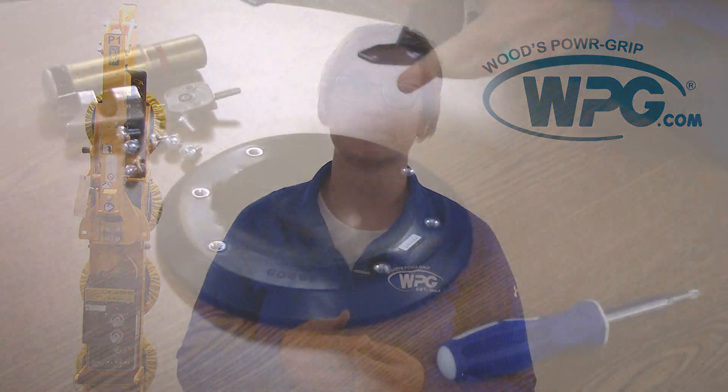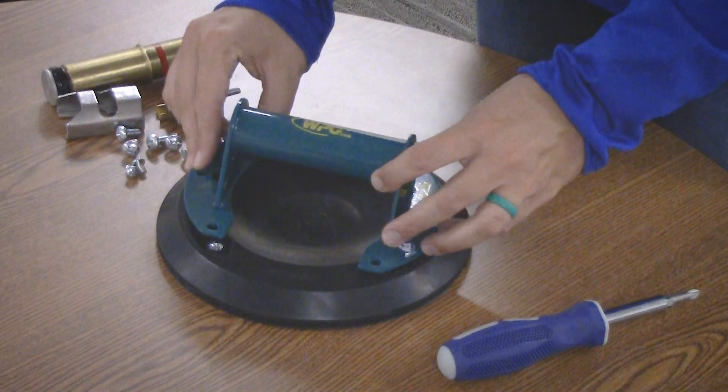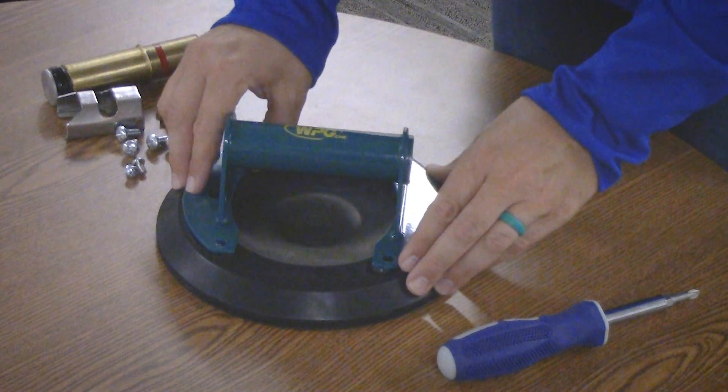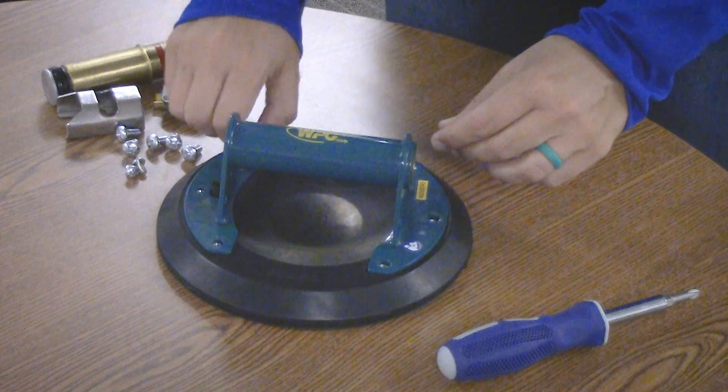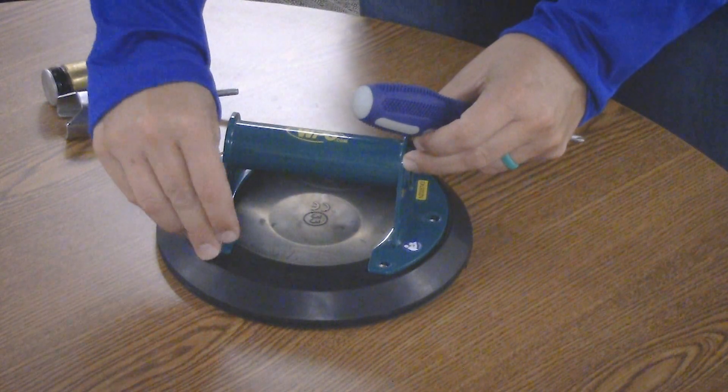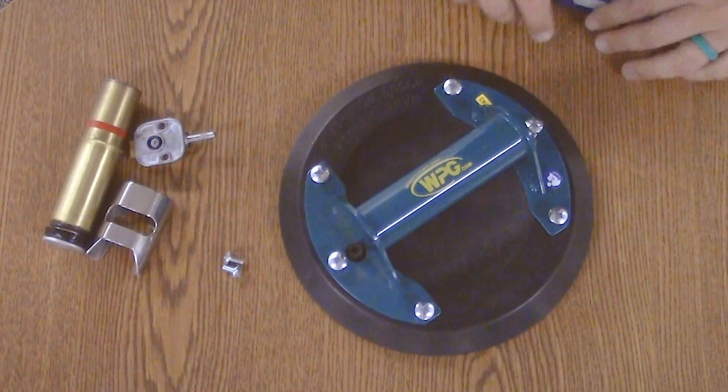Reassembly will be the reverse of what you've just completed, but there are some tips and tricks to help streamline the process. First, reposition the handle on the pad and install the pad screws. These just need to be hand tight.